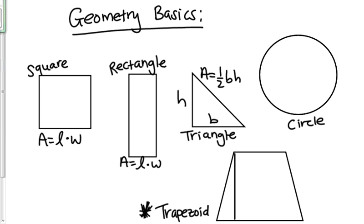The area of a circle is pi r squared, where r is your radius. The radius starts at the center of your circle and goes out like that on your circle.